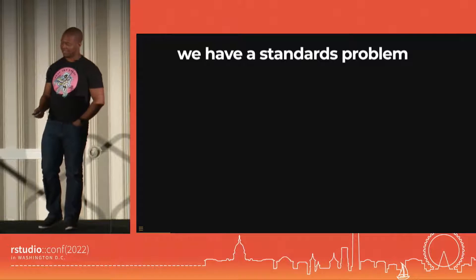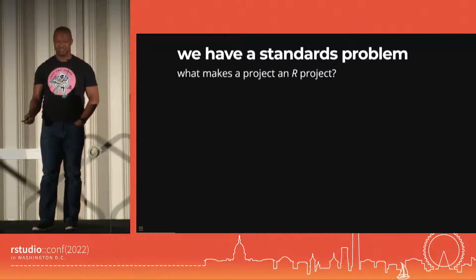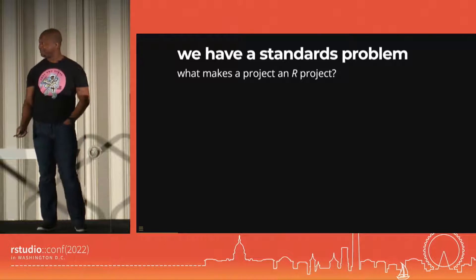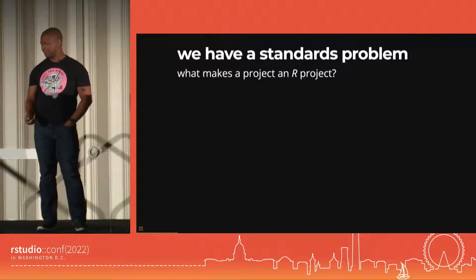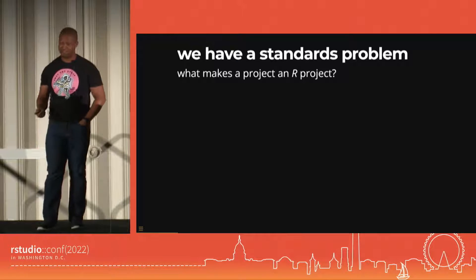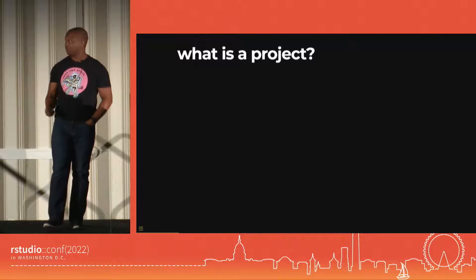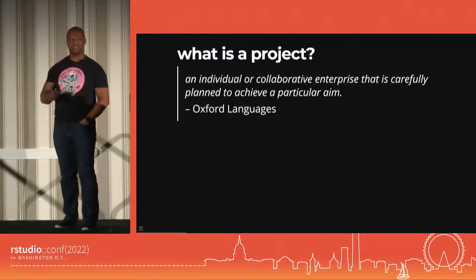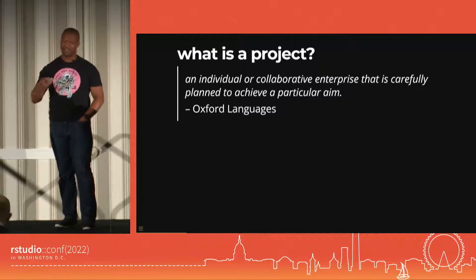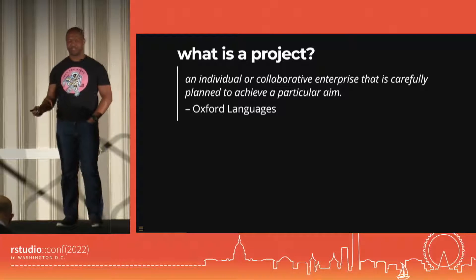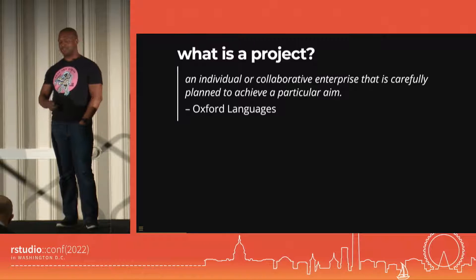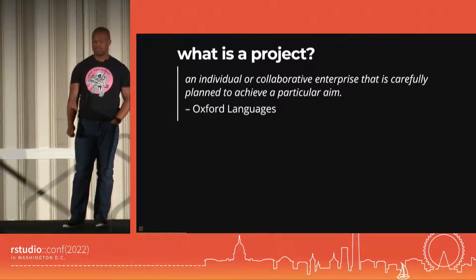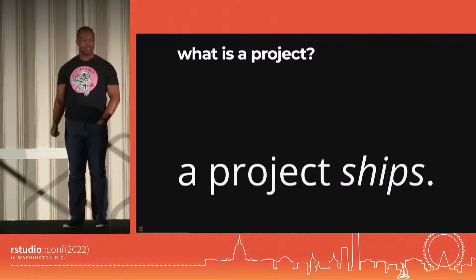The way I'd express that standards problem is that I don't know if we have a good answer to: what makes a project an R project? We need to define some terms. A project is an individual or collaborative enterprise aimed at a particular aim. But I like to define things functionally — a thing is what it does. And what do projects do? Projects ship.